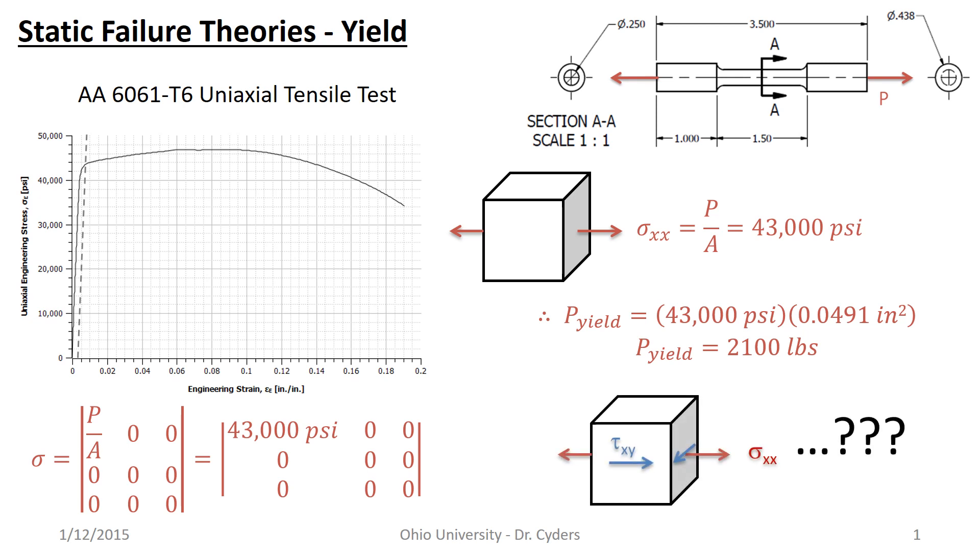But the question becomes, what happens if I were to impose a shear on that? How would I determine whether this complicated stress state is in yielding? Because I don't have nine numbers to compare it to. When we read a yield strength out of a book, it's one number. So what do I do?